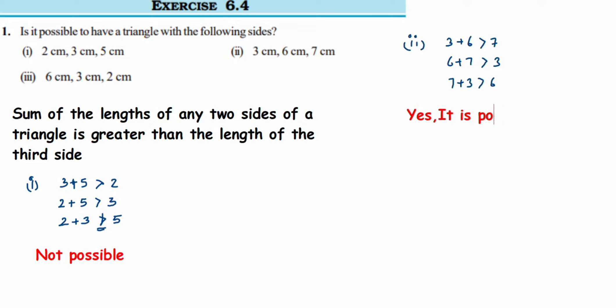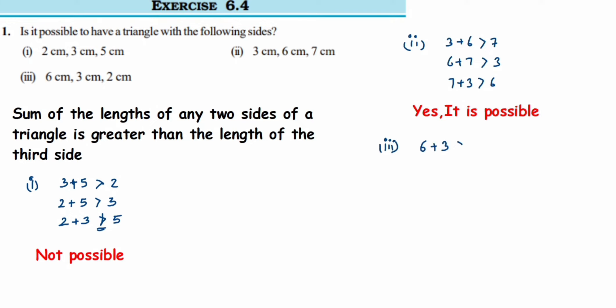Now the last one: 6 cm, 3 cm, and 2 cm. Checking combinations: 6 plus 3 is 9, and 9 is greater than 2. Next, 3 plus 2 is 5, but 5 is not greater than 6. One condition is not satisfied, so it is not possible to have a triangle with this measurement.